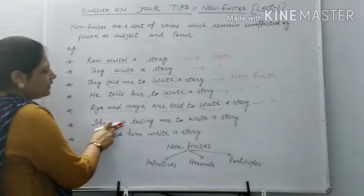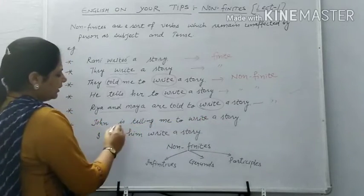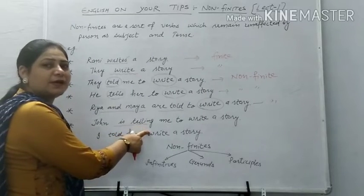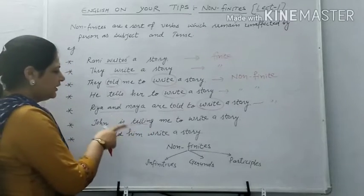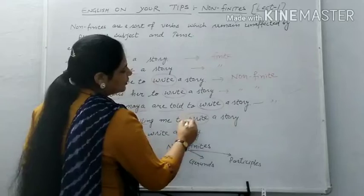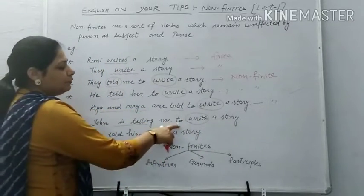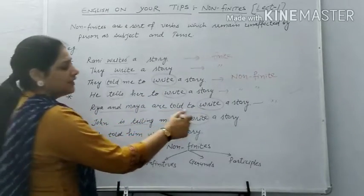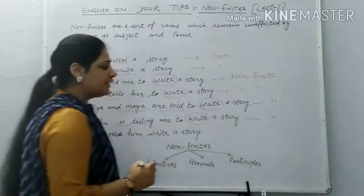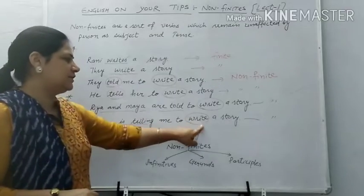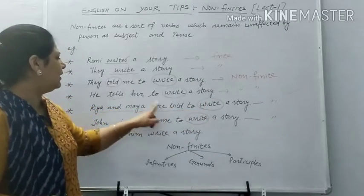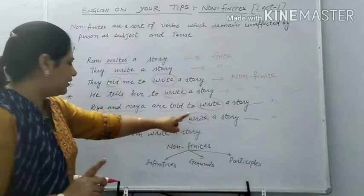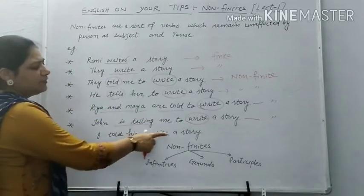Next example: 'Joan is telling me to write a story.' Here 'telling' indicates present continuous tense — 'tell' is followed by ING according to the rule of tense. But 'write' again is unchanged. In these constructive sentences, the first form is used and it doesn't change. Again it is non-finite. So 'tells,' 'told' — these are finite verbs, and 'write' here is non-finite.